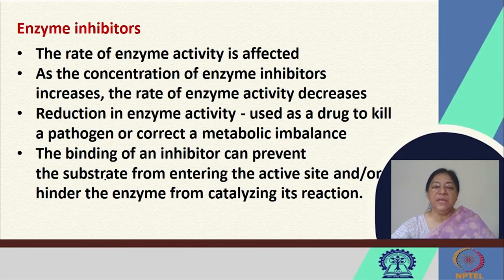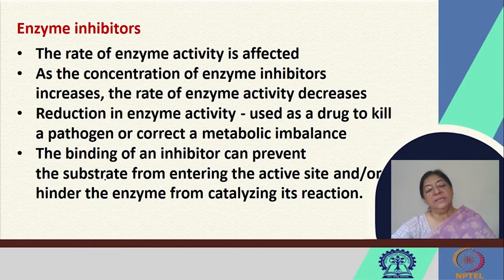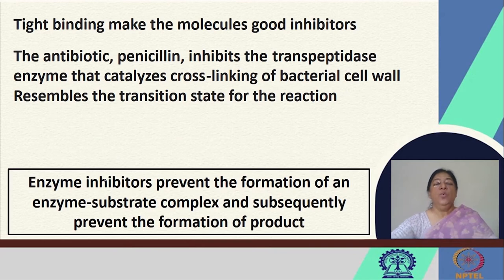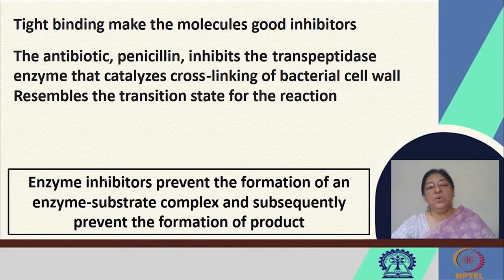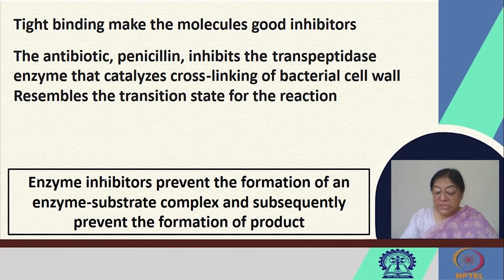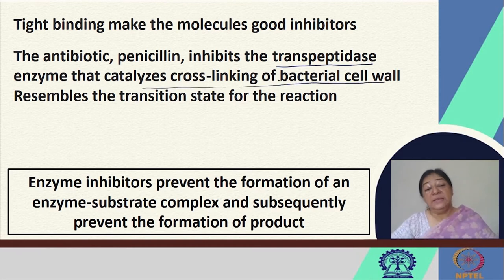The binding of an inhibitor will prevent the substrate from entering the active site, or will hinder the enzyme from catalyzing its specific reaction. We are looking for something that binds tightly to the enzyme, unlike a substrate, because we would like tight binding to inhibit enzyme activity. For example, the antibiotic penicillin inhibits the transpeptidase enzyme — the enzyme that catalyzes the cross-linking of the bacterial cell wall. In this case, penicillin resembles the transition state for the reaction, resulting in tight binding that prevents the reaction from proceeding.